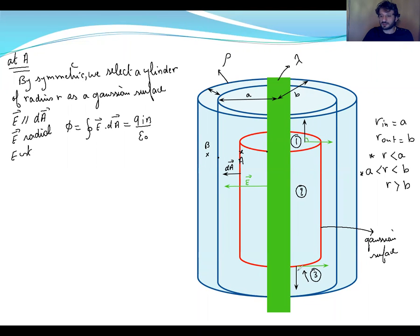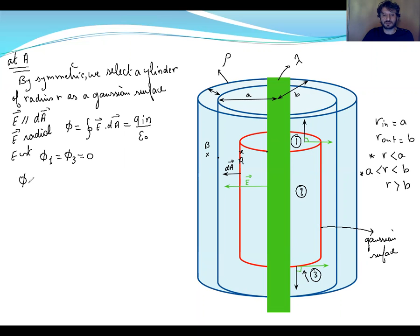The flux will only pass through the lateral side of the cylinder, because the line charge field goes outward in all directions. So the total flux equals only phi_2, and we write: integral of E·dA equals E·dA·cos(0) equals Q_n divided by epsilon_0.